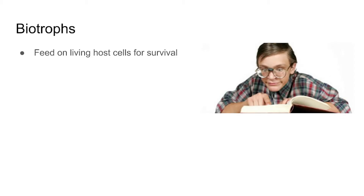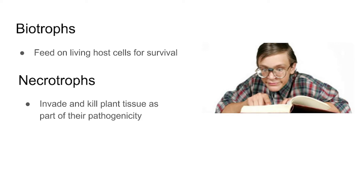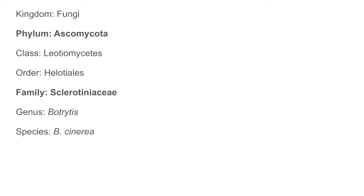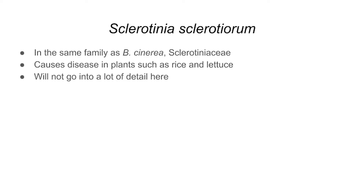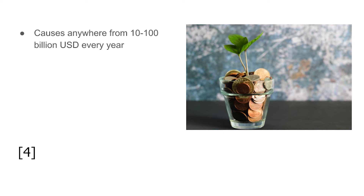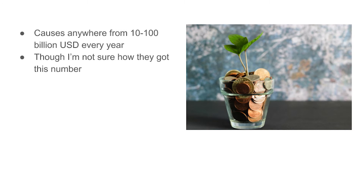Biotrophs feed on living host cells, while necrotrophs invade and kill plant tissue and then feed on it. Botrytis cinerea is a necrotroph, meaning it feeds on dead plant tissue. It is in the Ascomycete phylum and the Sclerotiniaceae family, which includes many other plant pathogens such as Sclerotinia sclerotiorum. Gray mold disease causes anywhere between $10 and $100 billion US dollars every year in economic losses, though exact information is hard to find.